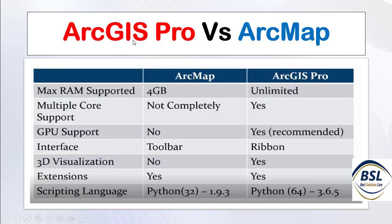To summarize with a comparison: the maximum RAM supported is 4 GB for ArcMap, while ArcGIS Pro supports unlimited RAM. Multi-core support is not complete in ArcMap, but is fully supported in ArcGIS Pro. GPU support in ArcMap is no, whereas in ArcGIS Pro it is supported and recommended.